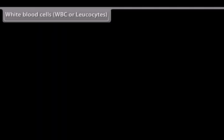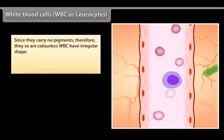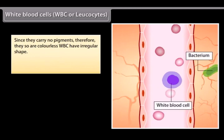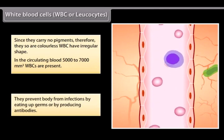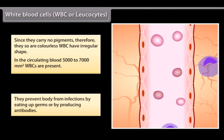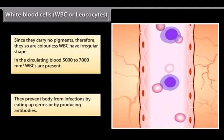White blood cells, WBC or leukocytes. Since they carry no pigments, they are colorless. WBC have irregular shape. In the circulating blood, 5,000 to 7,000 per cubic millimeter WBCs are present. They prevent body from infections by eating up germs or by producing antibodies.